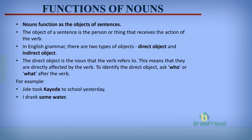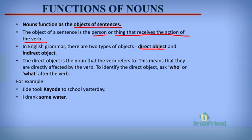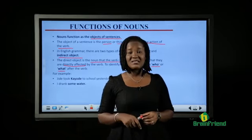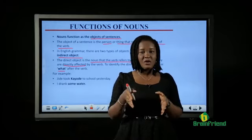Another function of nouns is that they function as the objects of sentences. The object of a sentence is the person or thing that receives the action of the verb. In English grammar, there are two types of objects: the direct object and the indirect object. The direct object is the noun that the verb refers to — they are directly affected by the verb. To identify the direct object, ask who or what after the verb.